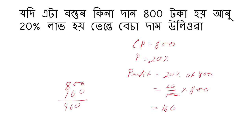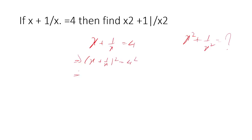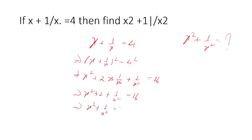If x plus 1 by x is equal to 4, find x squared plus 1 by x squared. Square both sides: x plus 1 by x whole squared equals 4 squared. Using the identity a plus b whole squared equals a squared plus 2ab plus b squared, we get x squared plus 2 plus 1 by x squared equals 16. So x squared plus 1 by x squared equals 14.